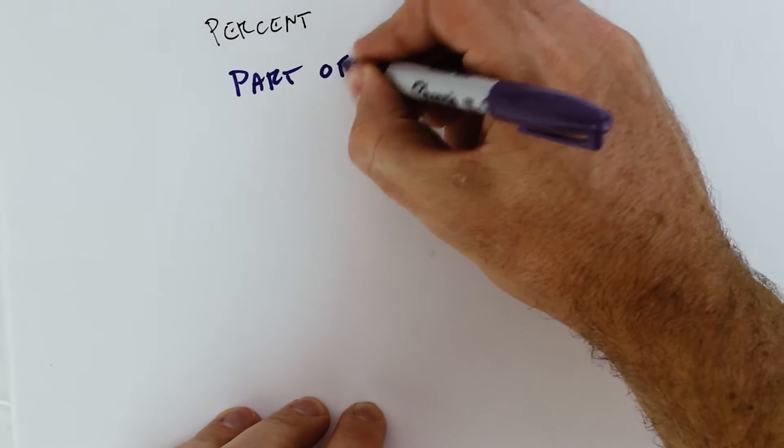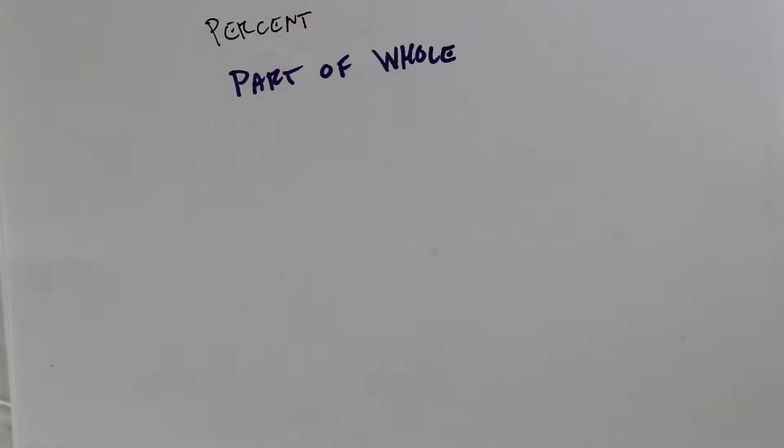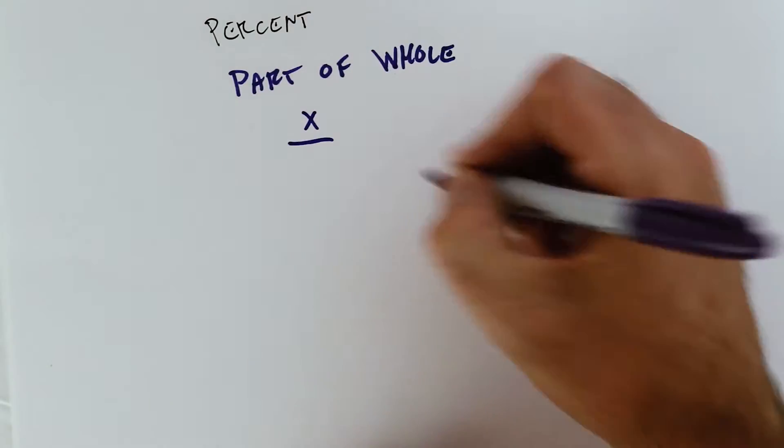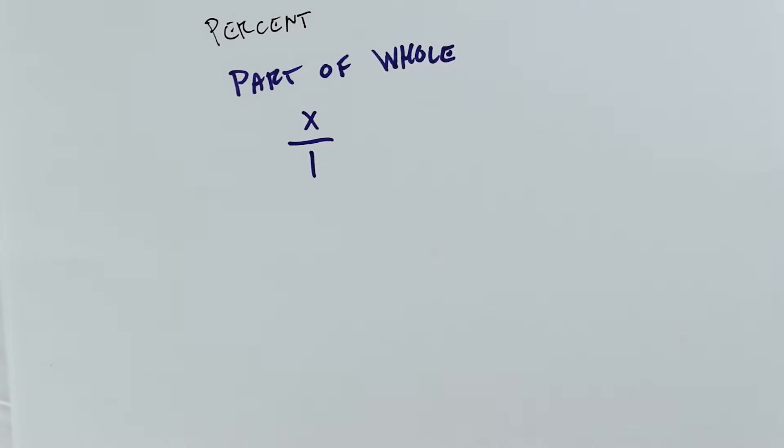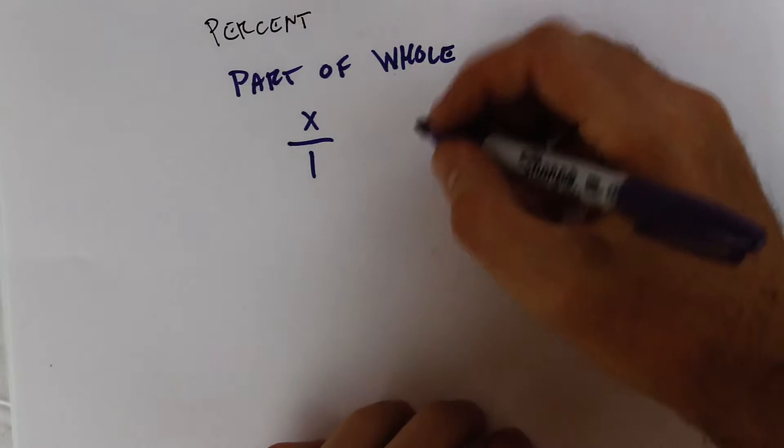So a percent is just a part of the whole. For example, x out of 1. If the whole is 1 or 100, whatever it is, okay?